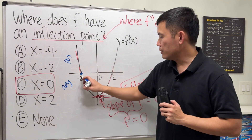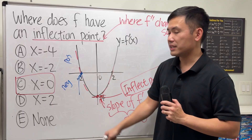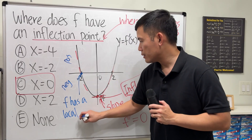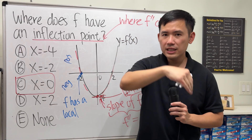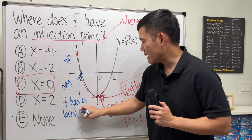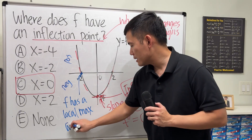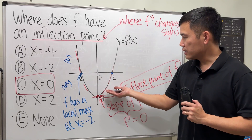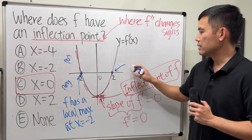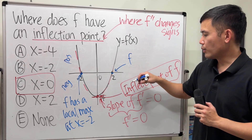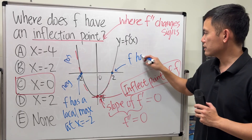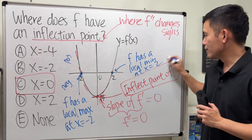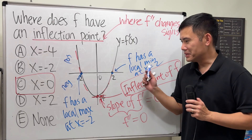At x equals negative 2, this is where the first derivative changes from positive to negative. So F has a local max at x equals negative 2. At x equals positive 2, the first derivative goes from negative to positive, so this right here is a local minimum — F has a local minimum at x equals positive 2. That's how you do these kinds of questions.